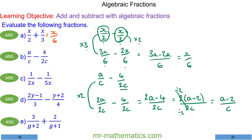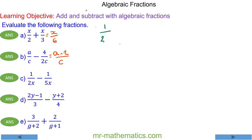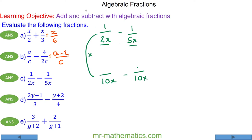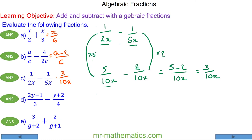For question C we have 1 over 2x minus 1 over 5x. The lowest common multiple of 2x and 5x is 10x. We multiply the first fraction by 5, since 2x times 5 makes 10x, and multiply the second by 2, since 5x times 2 makes 10x. So 1 times 5 is 5 and 1 times 2 is 2, giving us 5 minus 2 over 10x, which is 3 over 10x.